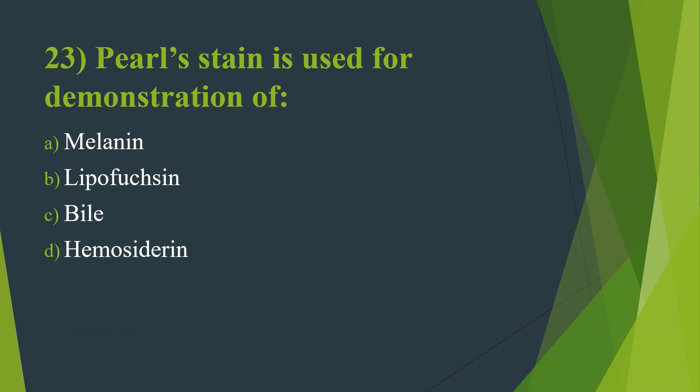Twenty-third question: Pearl stain is used for demonstration of — Option A, Melanin. Option B, Lipofuscin. Option C, Bile. Option D, Hemosiderin. Answer is Option D, Hemosiderin.